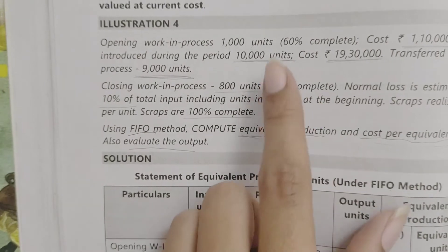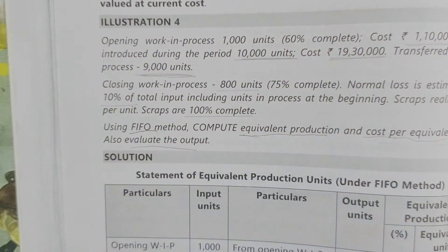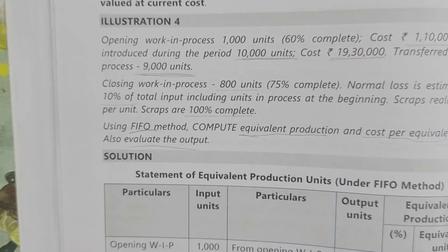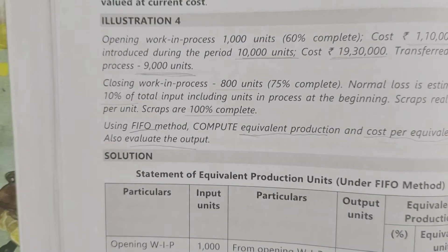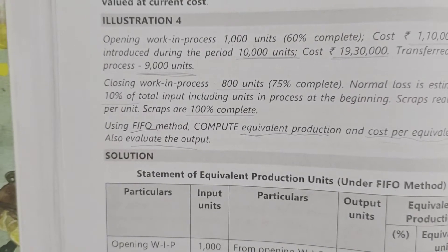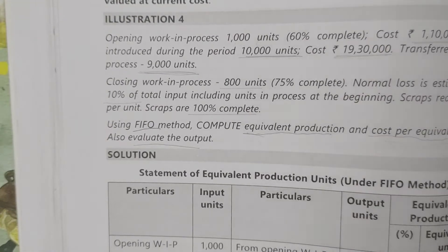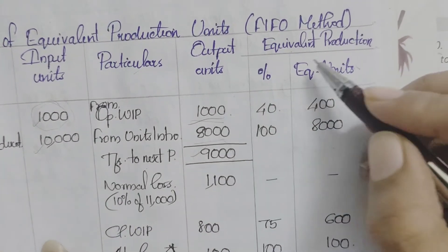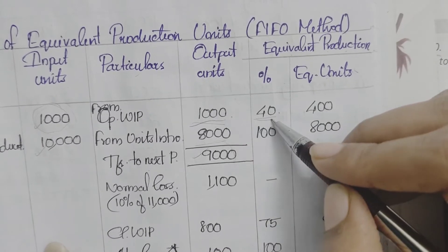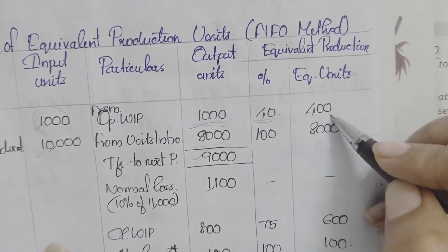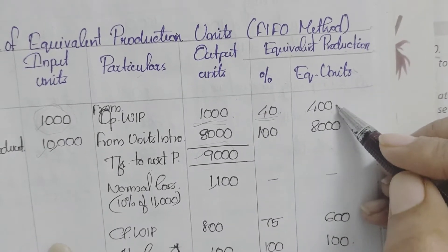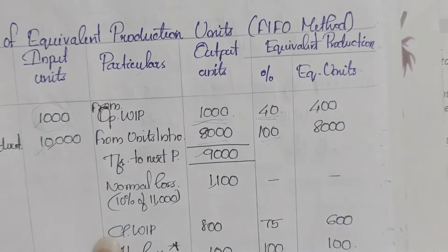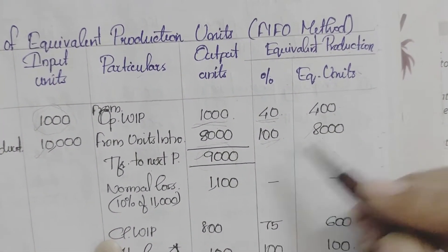Opening WIP is 60% complete. That means 60% cost was incurred in the previous period, so only the remaining 40% cost is to be completed now. Therefore, equivalent units for opening WIP = 1,000 × 40% = 400 units. Units introduced are assumed to be 100% complete: 8,000 × 100% = 8,000 equivalent units.